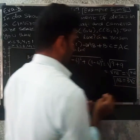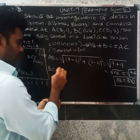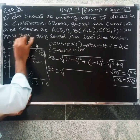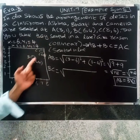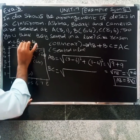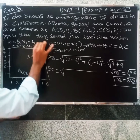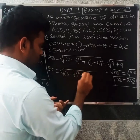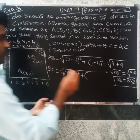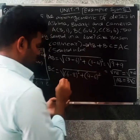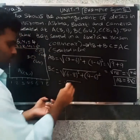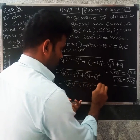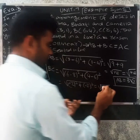Next, for BC: x1 equal to 6, y1 equal to 4, x2 equal to 8, y2 equal to 6. So BC equals root of (6 minus 8) whole square plus (4 minus 6) whole square, equal to (minus 2) squared plus (minus 2) squared, equal to 4 plus 4, equal to root of 8, which is 2 root 2.